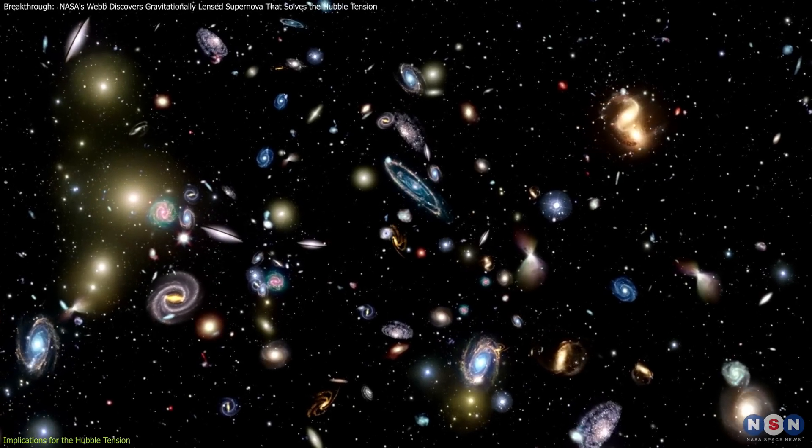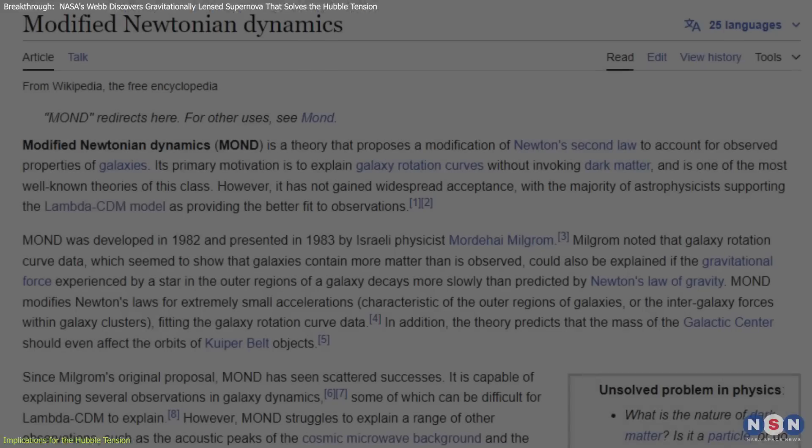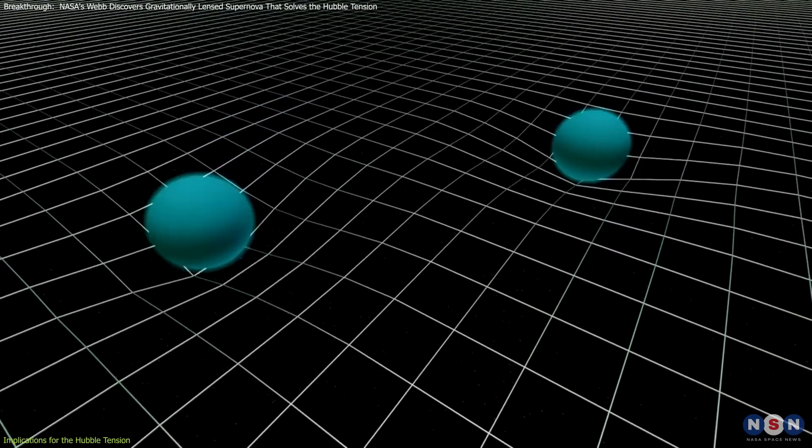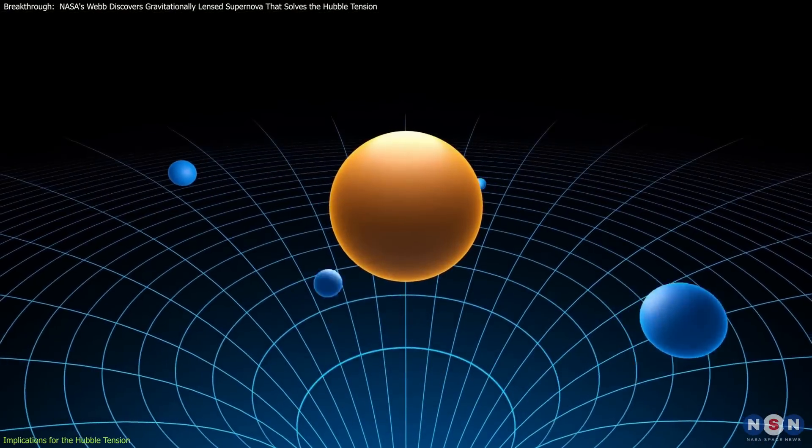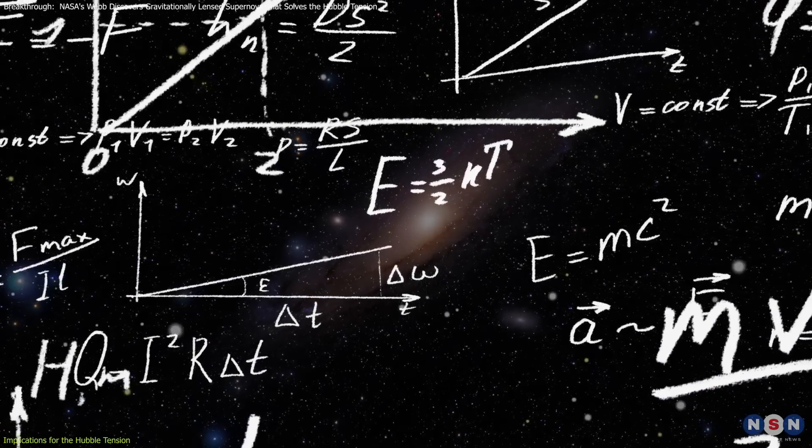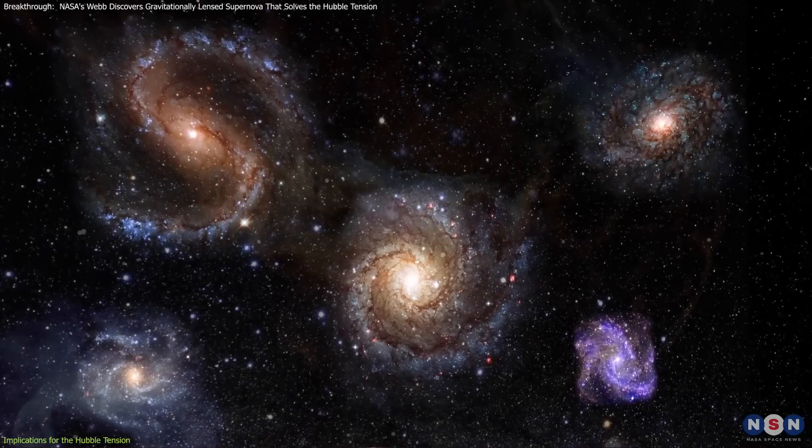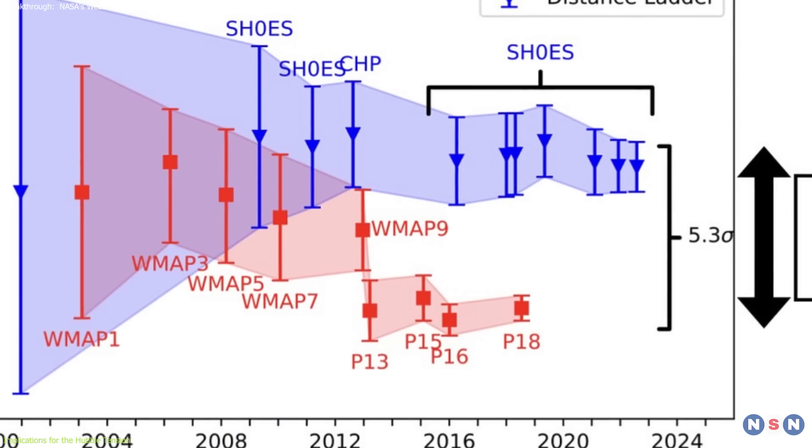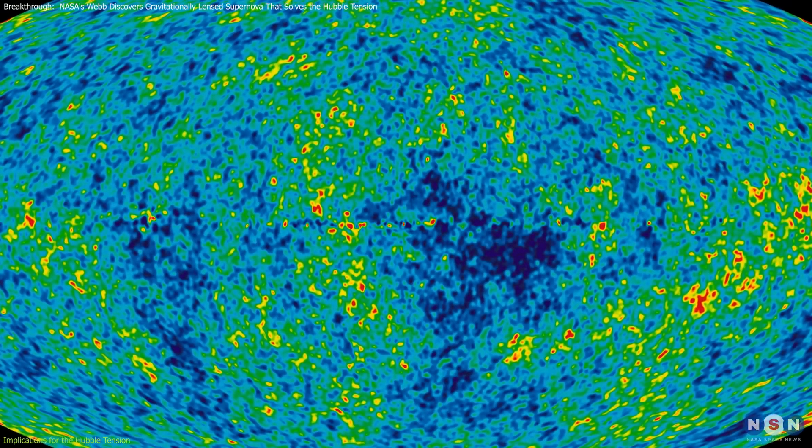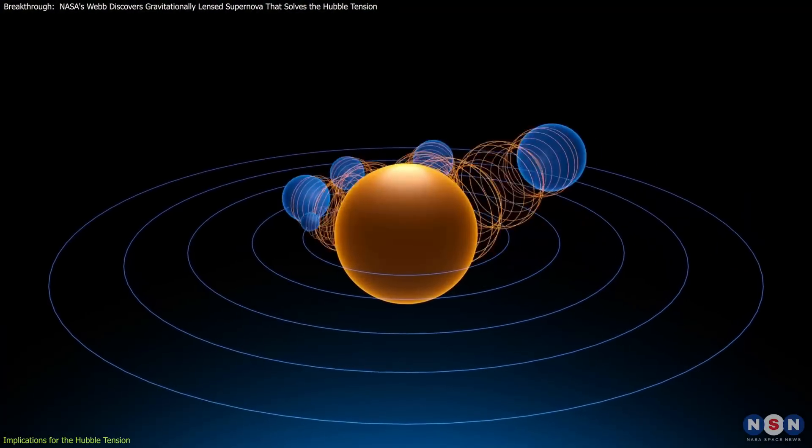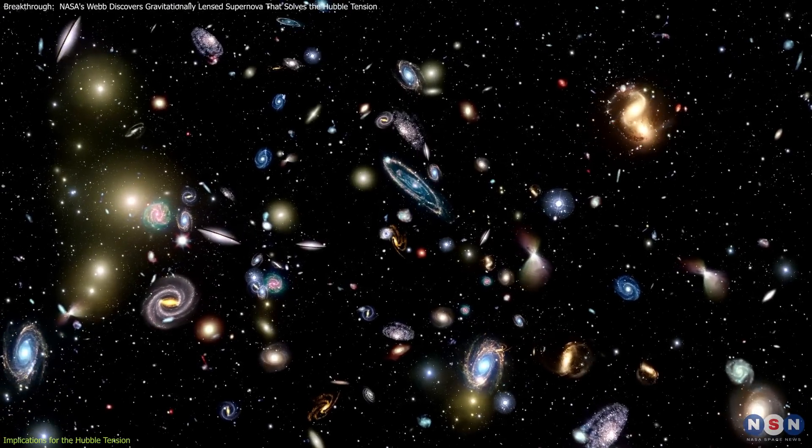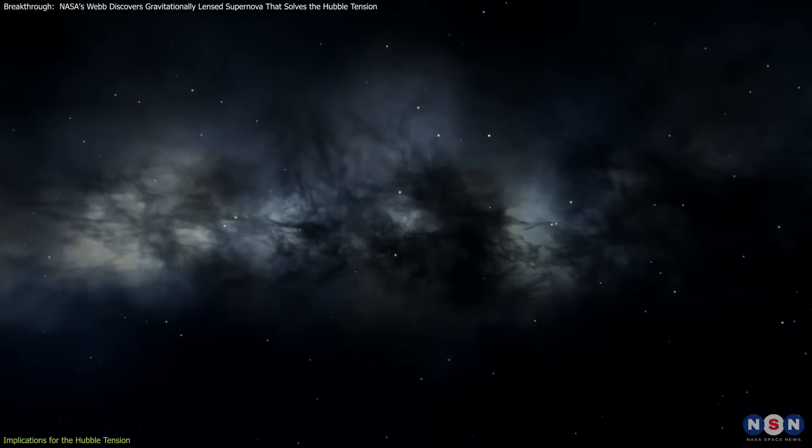Another possible explanation for the Hubble tension lies in modified gravity theories. One such theory is Modified Newtonian Dynamics, or MOND, which suggests that gravity behaves differently on cosmological scales than predicted by general relativity. In MOND, the laws of gravity might need adjustment when applied to considerable distances, such as those between galaxies. This modification could reconcile the differences between local measurements of the Hubble constant and those based on observations of the early universe, such as the Cosmic Microwave Background CMB. The idea behind modified gravity theories is that our current understanding of gravity may need to be revised, mainly when applied to the vast scales of the universe. If these theories hold, they could provide an alternative explanation for the Hubble tension without needing to invoke dark energy or dark matter as the primary factors.